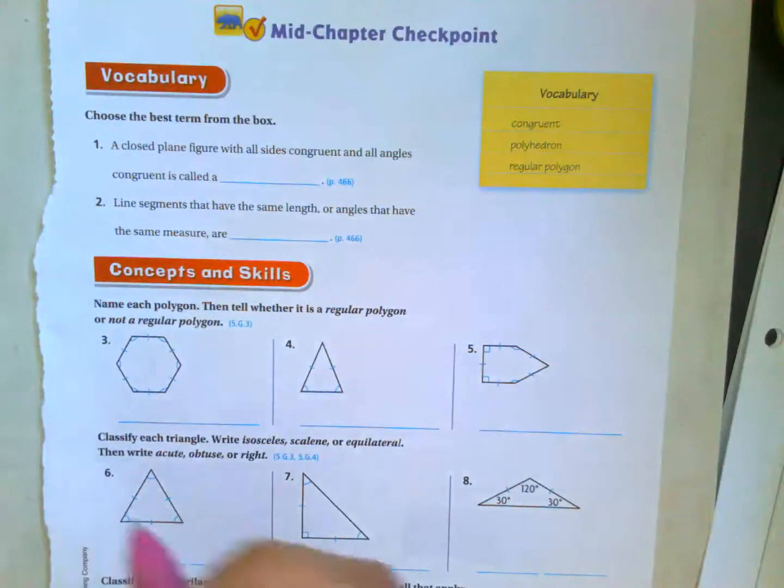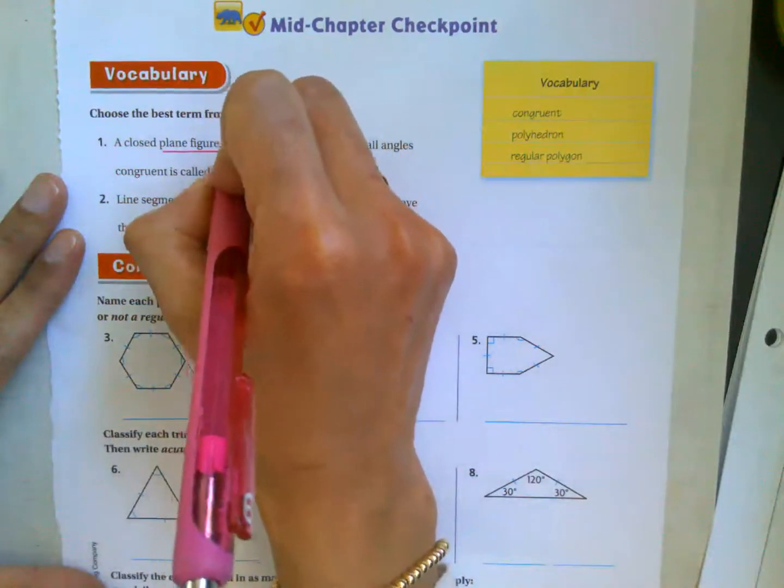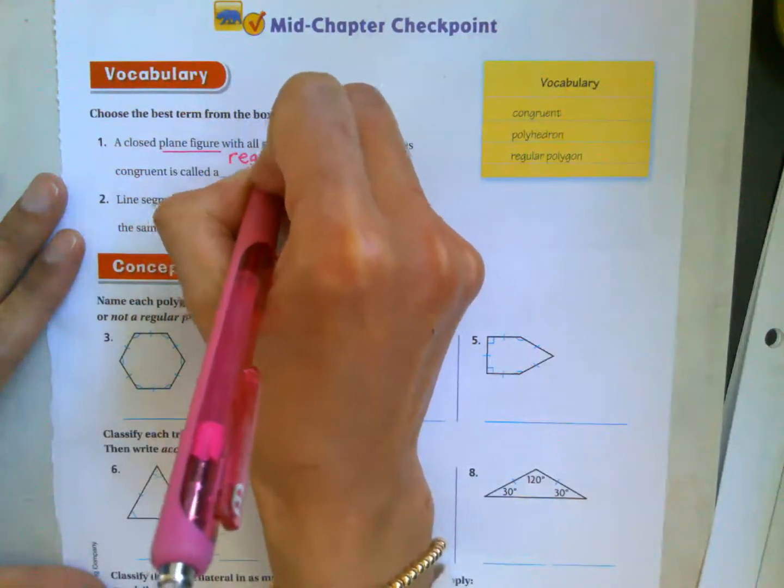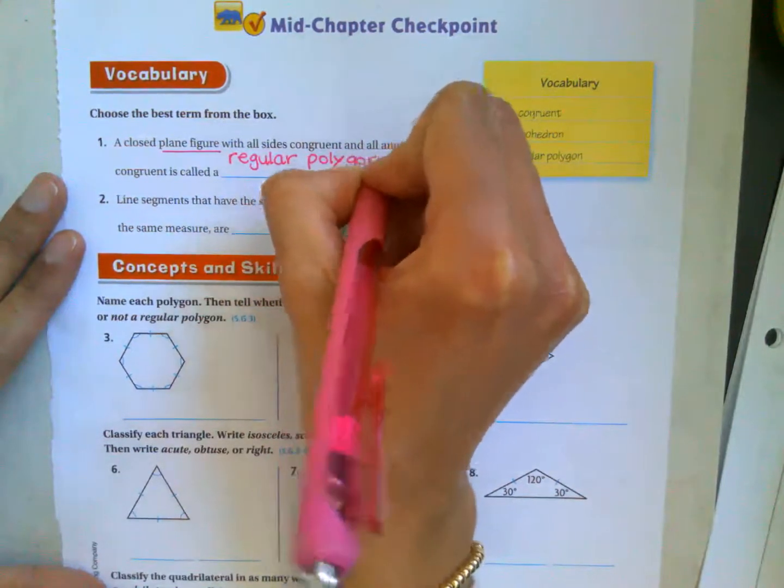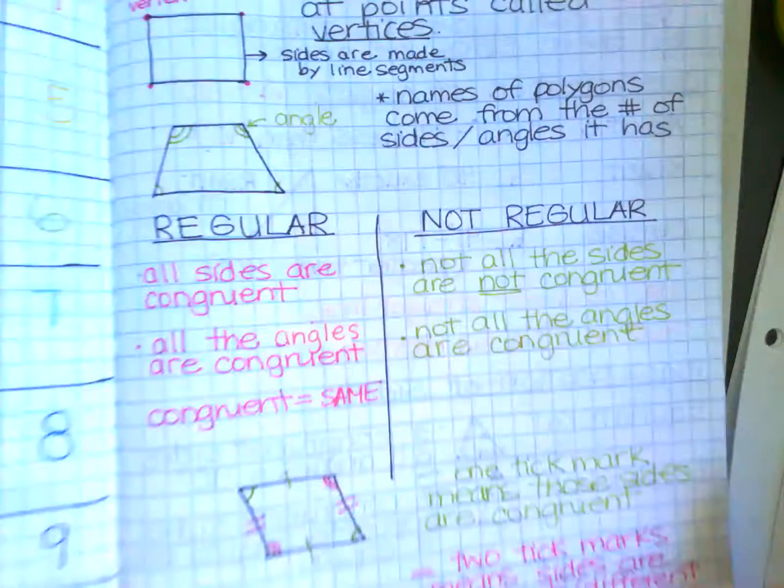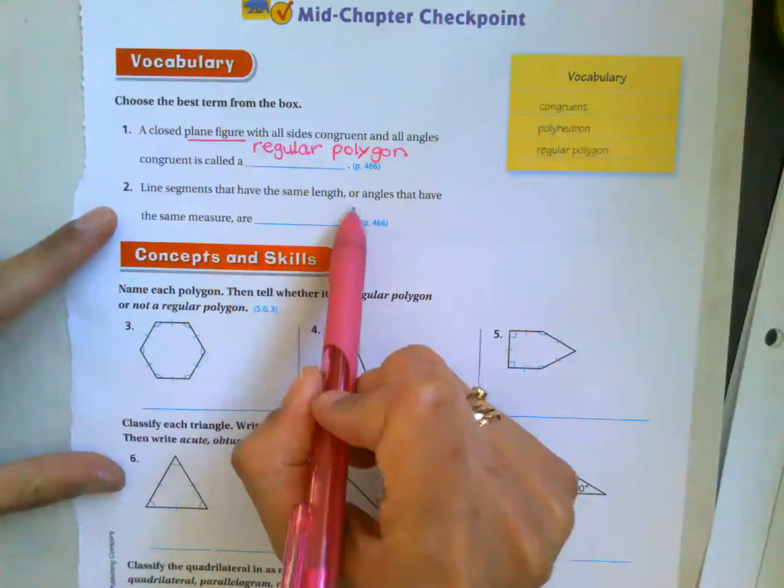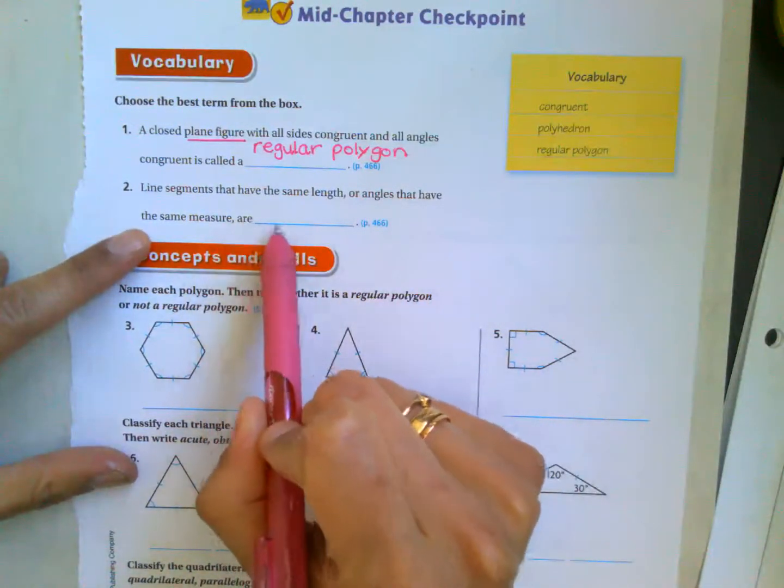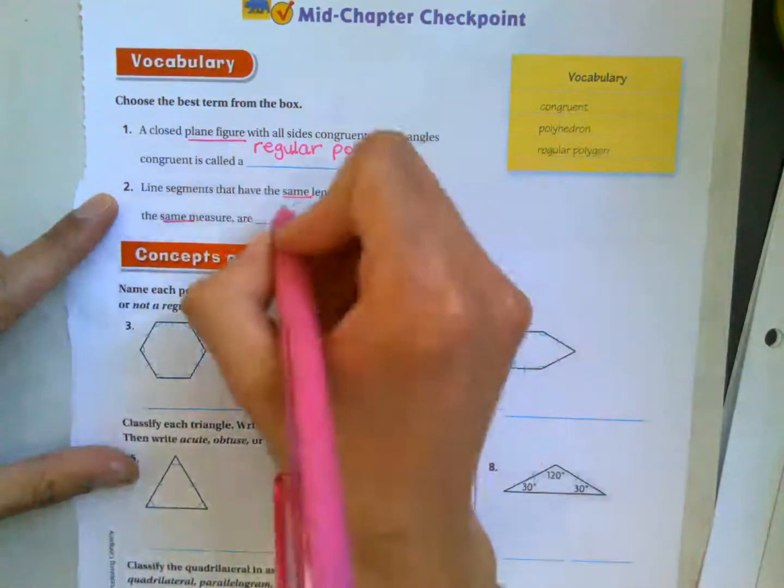All right, so a closed plane figure, so it's a plane figure. So I know that means it's a regular polygon. Forgot regular polygon. Right here, regular, all sides are congruent. Line segments that have same length or angles that have the same measure are congruent. So same or same is congruent.